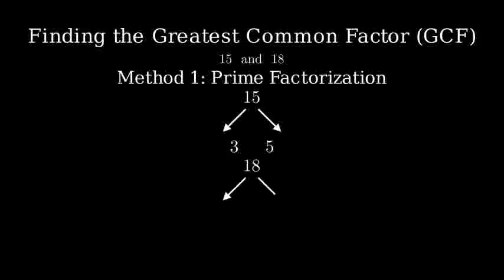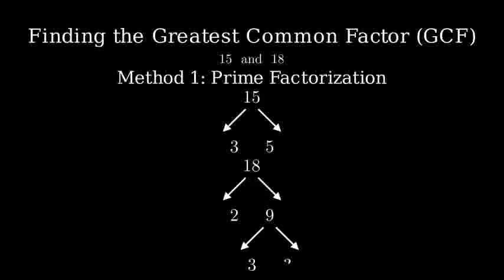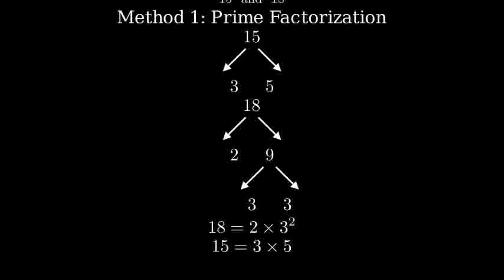Now that we have both numbers factored, let's identify the common prime factors. Looking at both factorizations, we can see that 3 is the only prime number that appears in both 15 and 18.